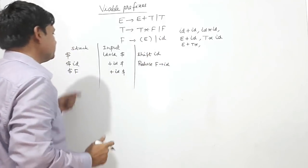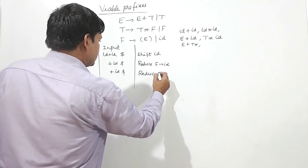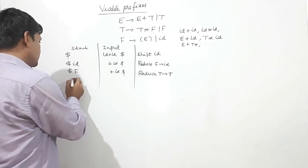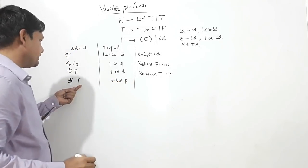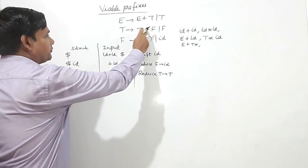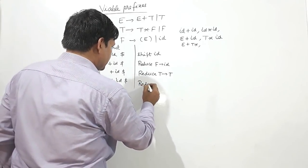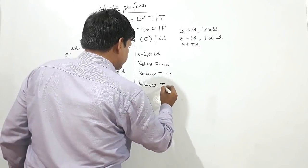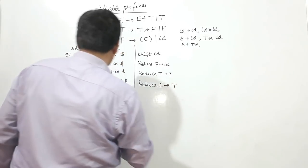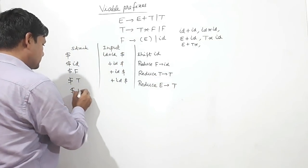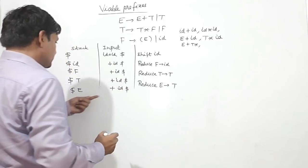Now I can check: F can be reduced to T, so reduce F by T — dollar T plus ID dollar. I check here: T plus — there is no match of T and plus, there is only star. So I will reduce T by E, getting dollar E plus ID dollar.